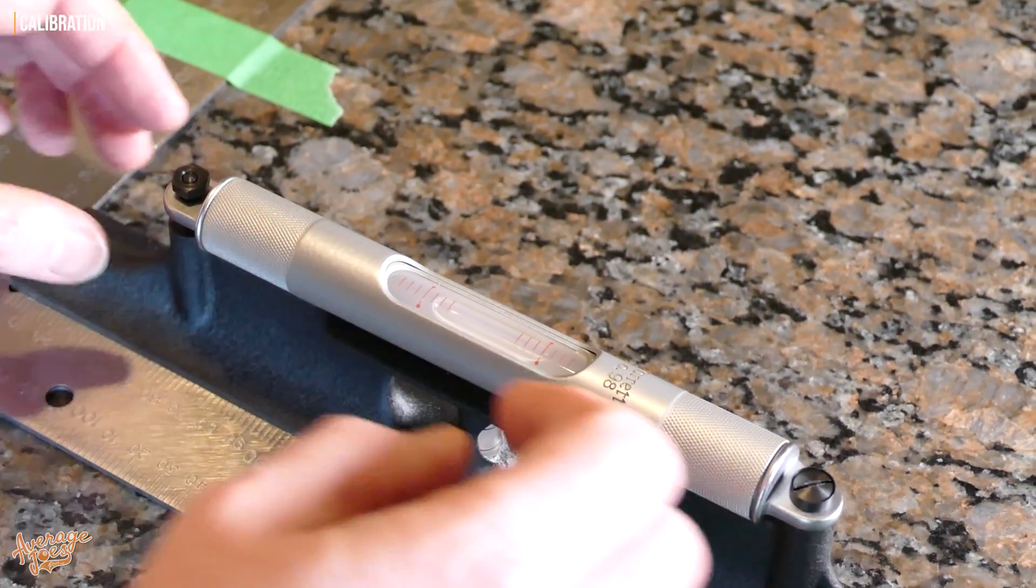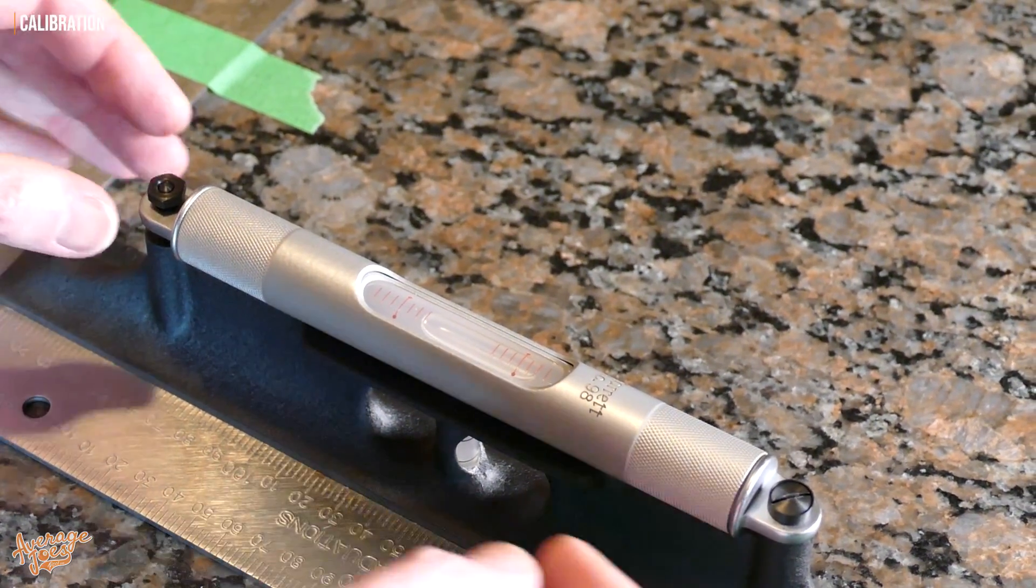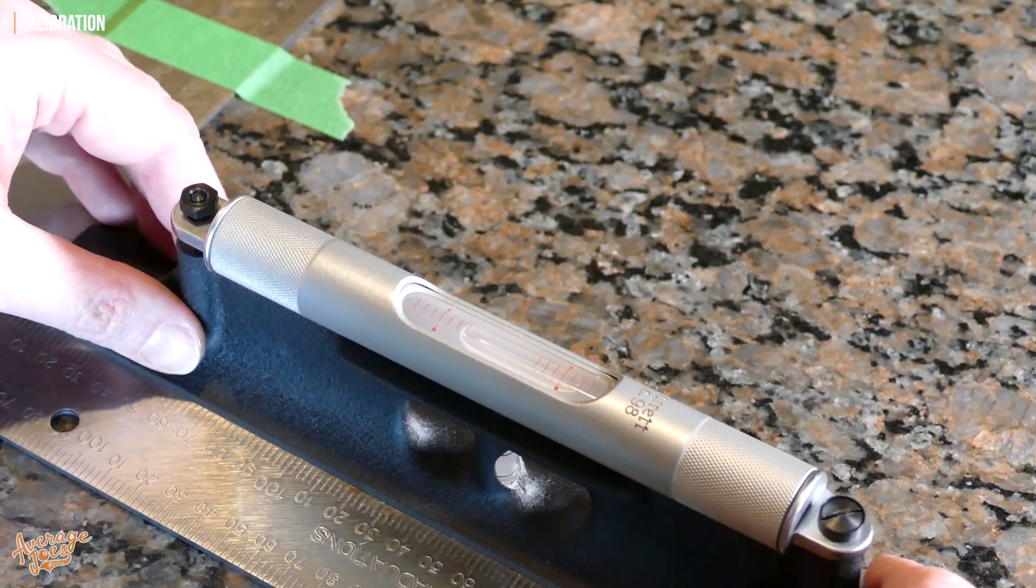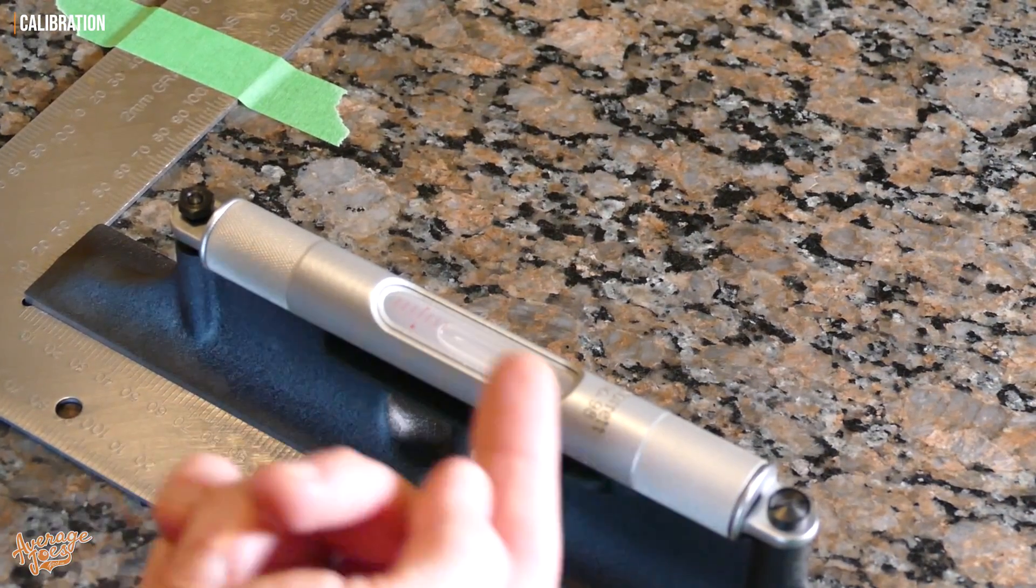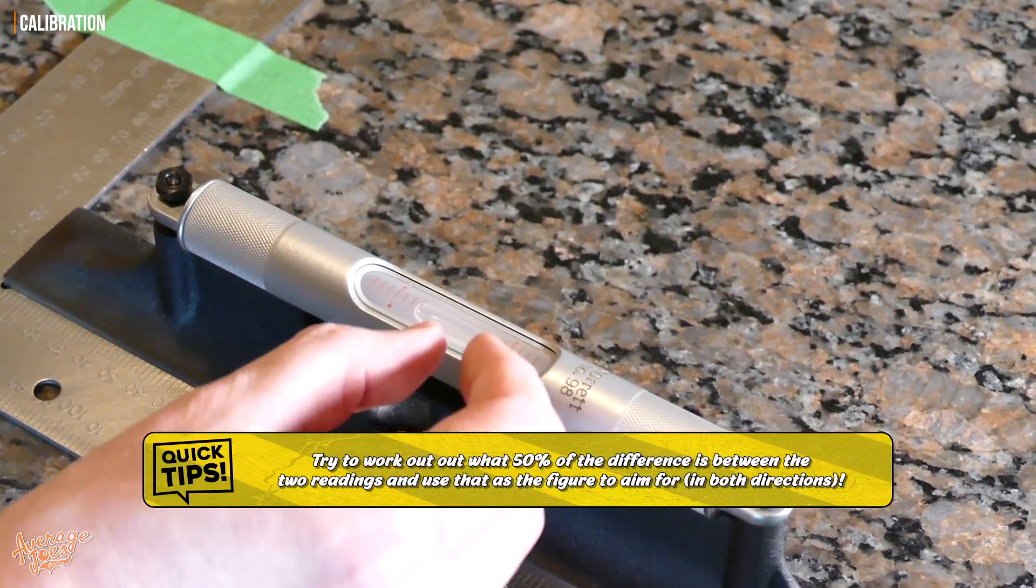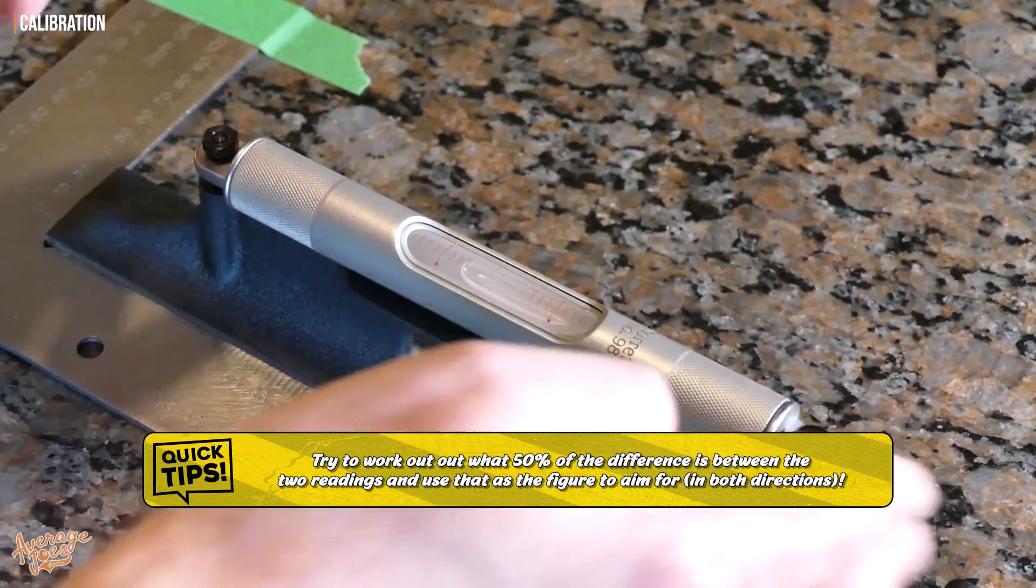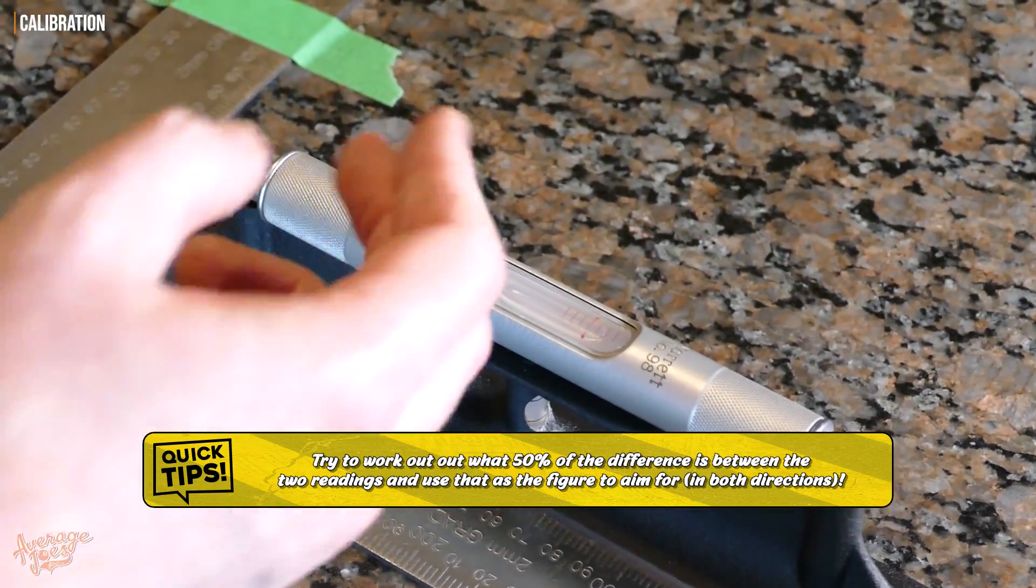Spin the level around a few times, take a note of the reading. That's going to tell you whether this end here needs to move up or down to make it level. An important thing to remember when you're making your adjustments is you have to even out whatever the difference is when you spin it by exactly halfway, so that when you spin it around you're going to end up hopefully with the same measurement.